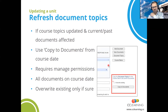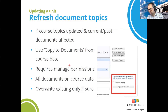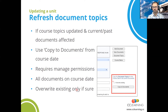This is the bit you have to be careful about. If you're going to copy the course topics and current and past documents are affected — when you go to the course date and copy it across, you can overwrite, and it's going to copy these new course topics to become document topics on all of those documents. This requires management permissions — only overwrite if you're sure. Then double-check to make sure it's correctly occurred — you can see how outcome details may be lost when you do that.